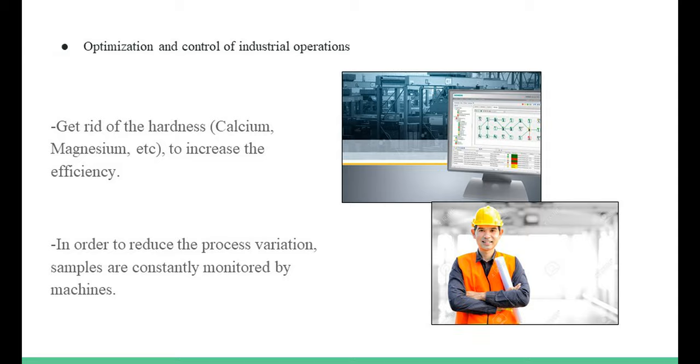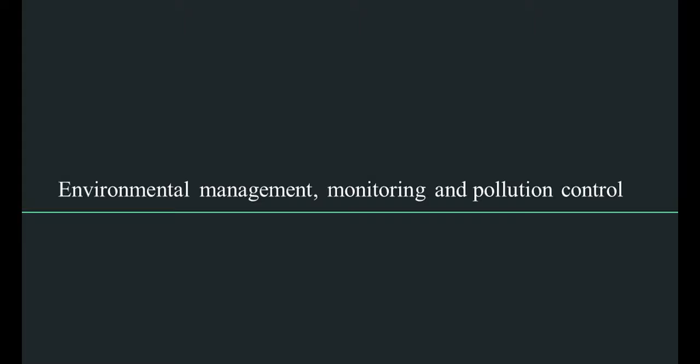The process variation can be reduced by monitoring the samples constantly. Trend charts with automatic warning limits saves costs from product loss or reduced product quality, whereas manual sampling and laboratory analysis techniques may take several hours to accomplish the same results. Environmental management, monitoring, and pollution control.